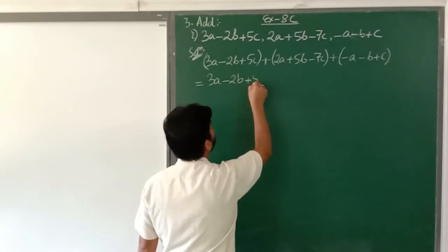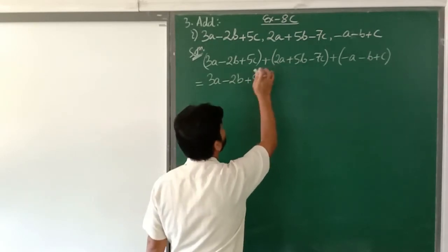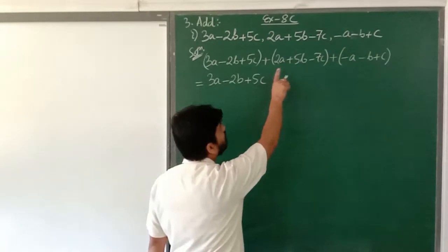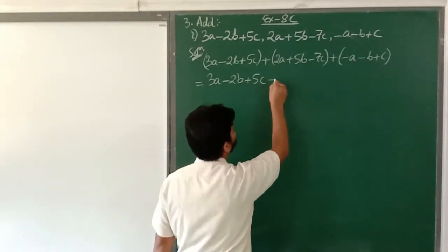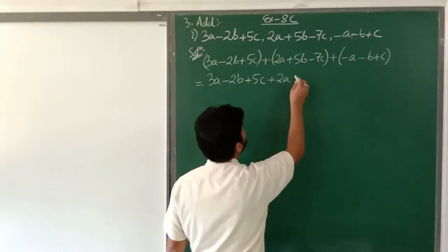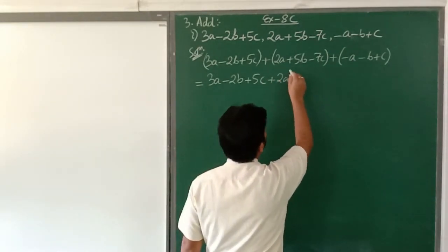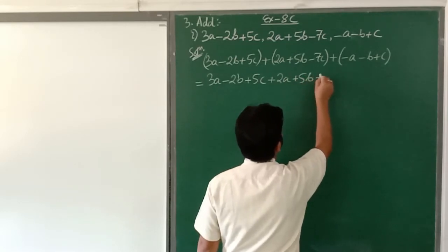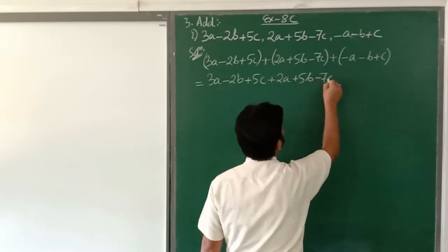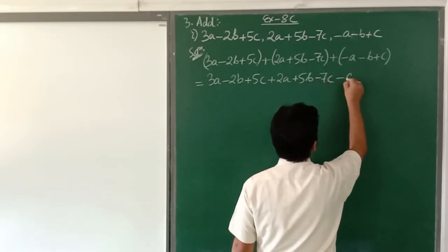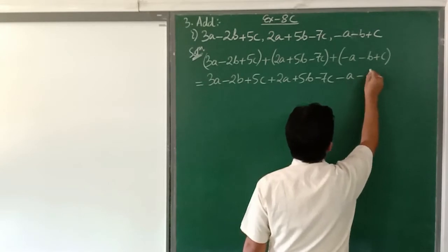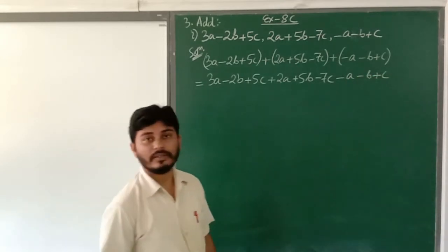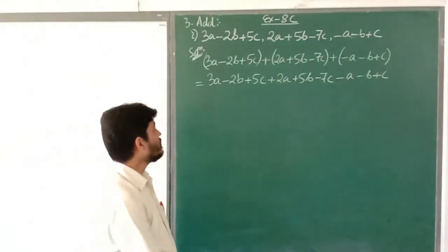Since this is plus, there won't be any change inside the bracket. We get 3a minus 2b plus 5c, then plus 2a plus 5b minus 7c, then again plus into minus is minus: minus a minus b plus c.